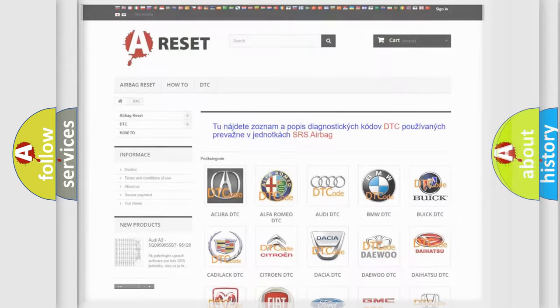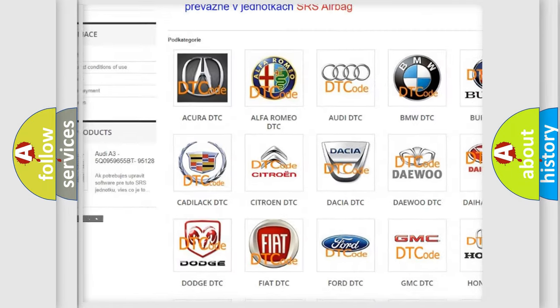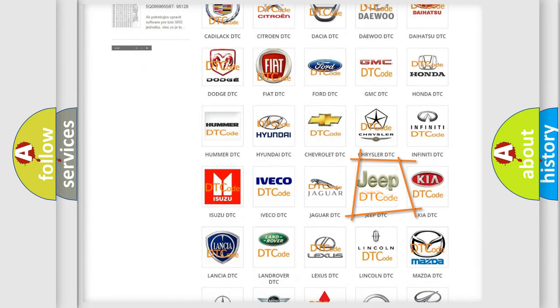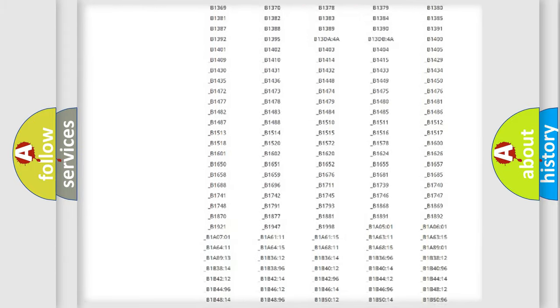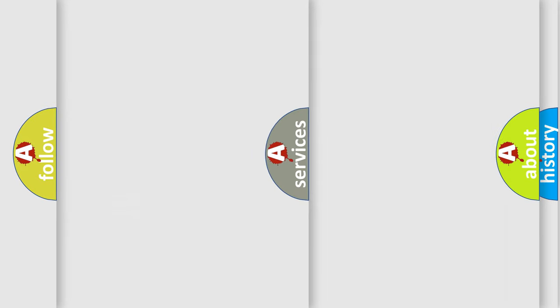Our website airbagreset.sk produces useful videos for you. You do not have to go through the OBD2 protocol anymore to know how to troubleshoot any car breakdown. You will find all the diagnostic codes that can be diagnosed in Jeep vehicles, and also many other useful things.